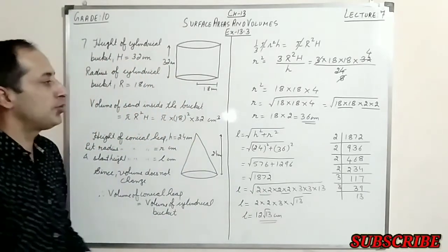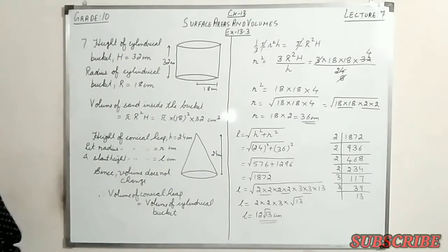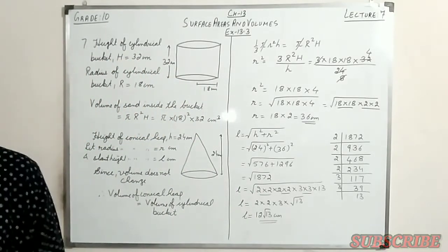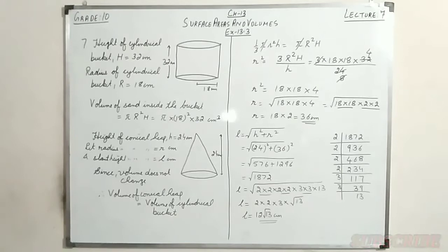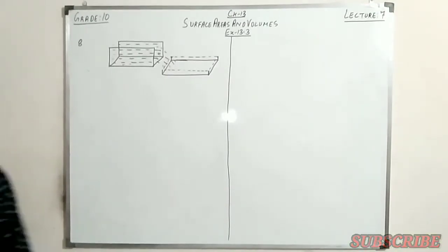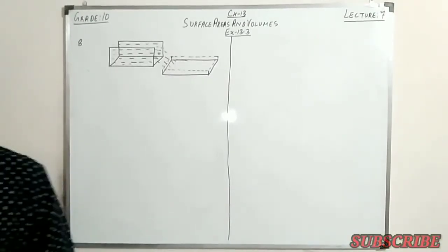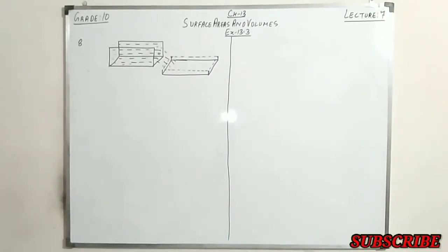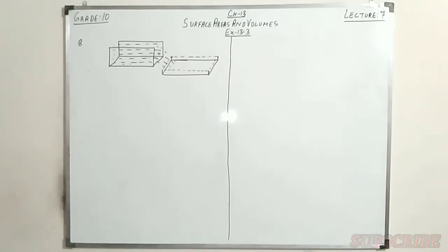This is the solution of question number 7. Let's go to the next question, question number 8. It is given: water in a canal 6 meters wide and 1.5 meters deep is flowing with a speed of 10 kilometers per hour. How much area will it irrigate in 30 minutes if 8 centimeters of standing water is needed?